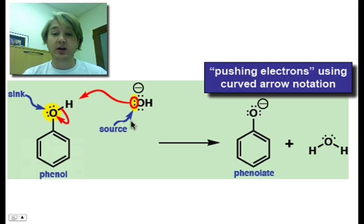So as we draw these two arrows, they combine to form this phenolate with an O- charge here, and then water. In this case, we have pushed our electrons using our curved arrow notation.